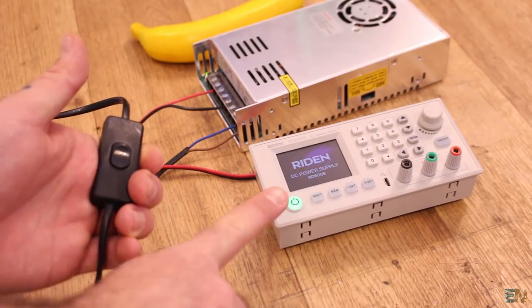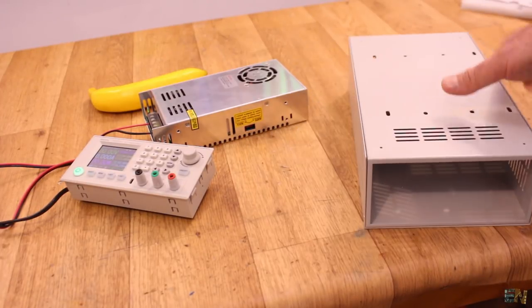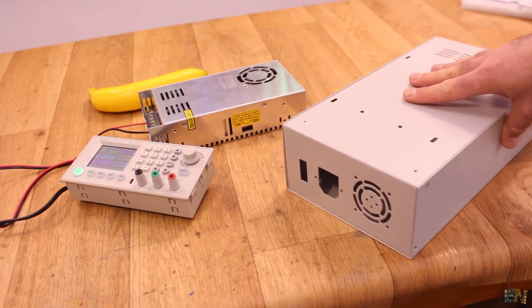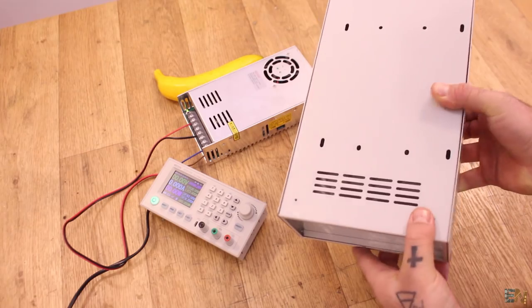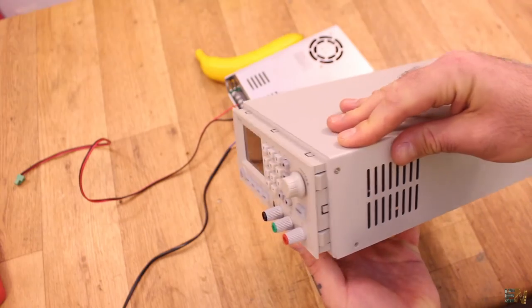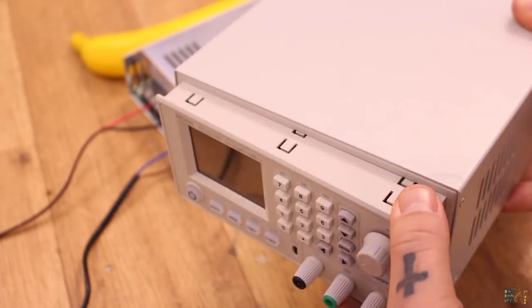But in my case, to get a very nice final look and since I've already invested in a good supply, I went and bought this case kit from Banggood as well. This will add 35 euros more to the final price. This kit is fully compatible with the RD6006. Actually, it's made exactly for this power controller.